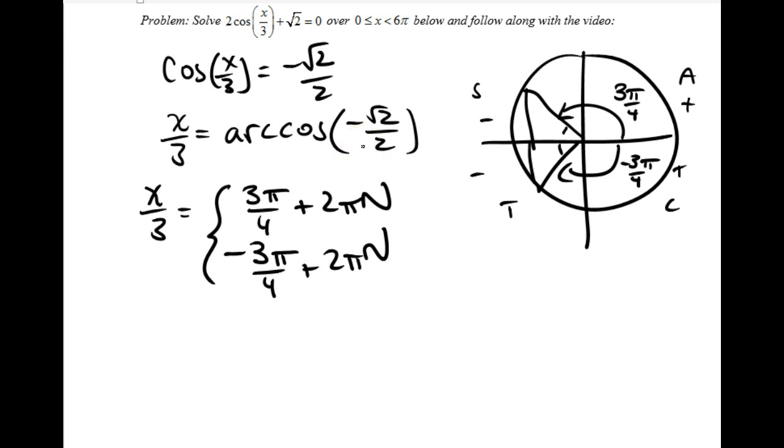But my goal wasn't just to get the arc cosine but to solve for x. In order to solve for x, I need to get rid of this one third by multiplying both sides of the equation by 3. I'm going to multiply all of this stuff, 3 pi over 4 plus 2 pi n, negative 3 pi over 4 plus 2 pi n. All of that gets multiplied by 3.